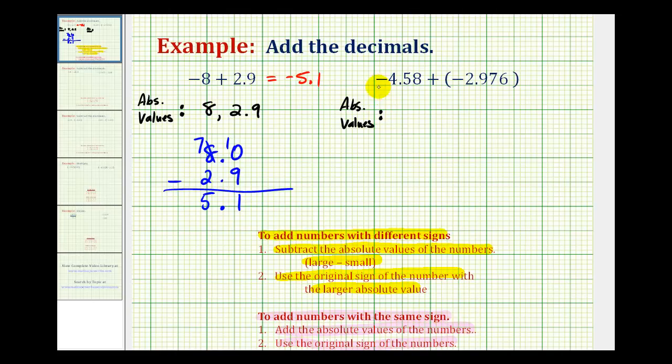Well, the absolute value of negative 4.58 would be positive 4.58. And the absolute value of negative 2.976 is positive 2.976.